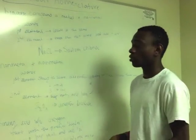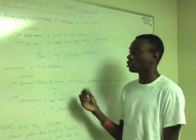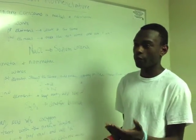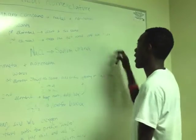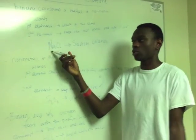For the second element, you take the root word and add the suffix 'ide'. The second element in NaCl is chlorine, so I keep chlor- and add 'ide' to get chloride. So NaCl becomes sodium chloride.